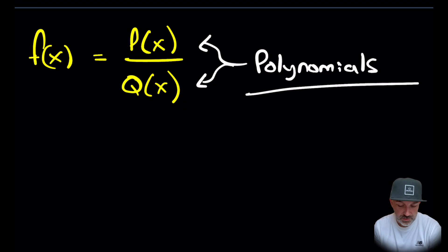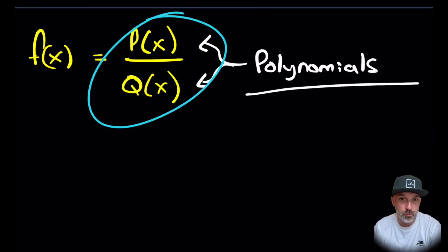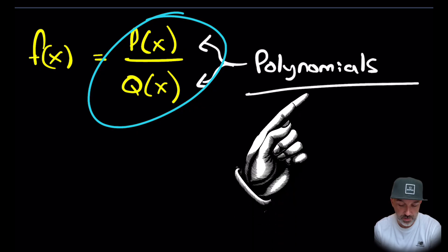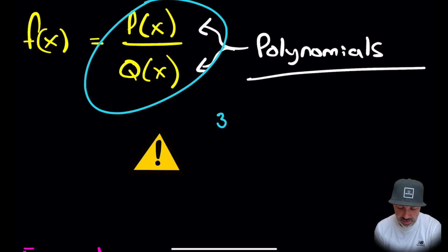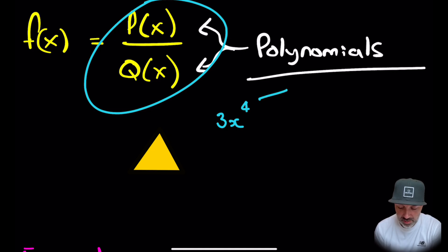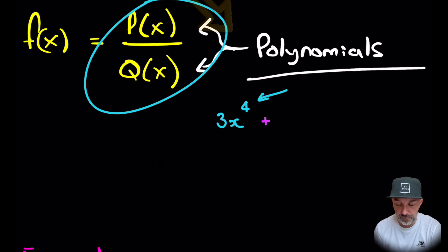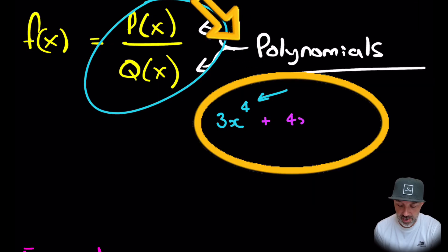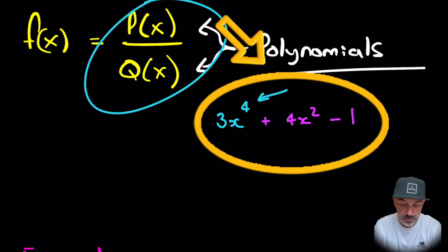Let's firstly define what a rational function is. It is when we have a quotient — one polynomial divided by another polynomial. A polynomial is some coefficient, let's say three, and then we have a power of x, so we could have x to the four. This power needs to be an integer; it cannot be a fraction. We can have subsequent terms, like x squared minus one, and this is our example of a polynomial.